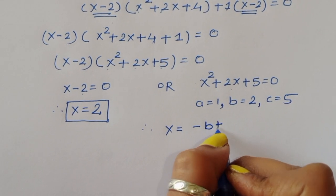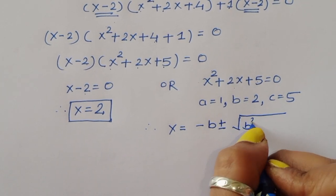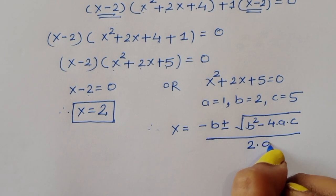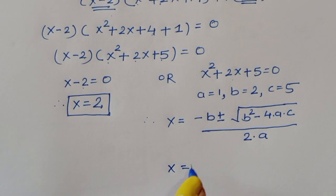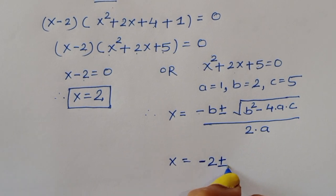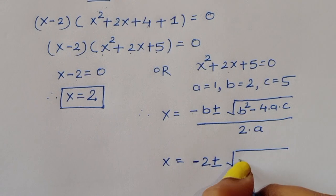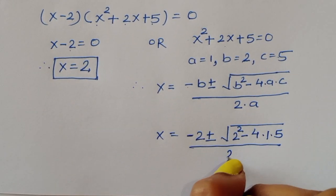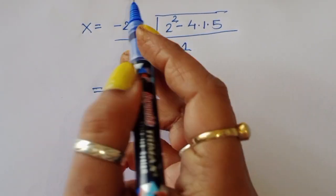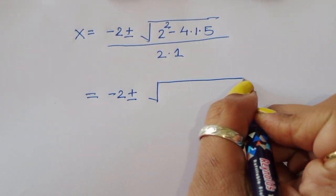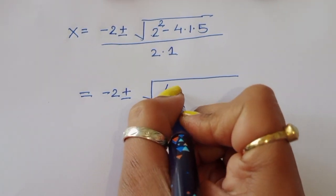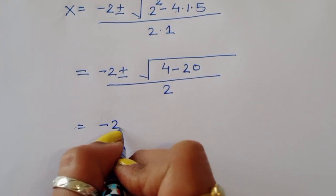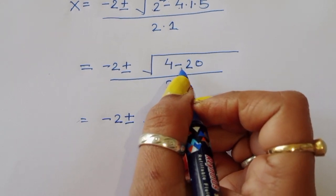Using the quadratic formula: x equals minus b plus or minus square root of b squared minus 4ac, divided by 2a. Substituting a equals 1, b equals 2, c equals 5: x equals minus 2 plus or minus square root of 2 squared minus 4 times 1 times 5, divided by 2. That gives minus 2 plus or minus square root of 4 minus 20, divided by 2.